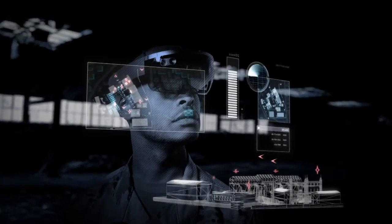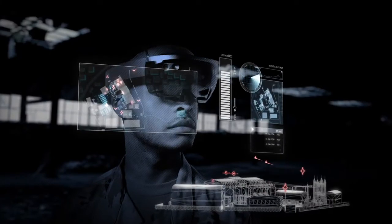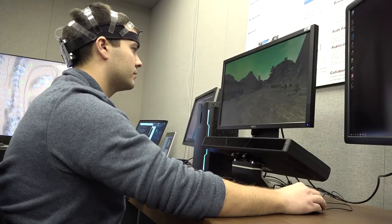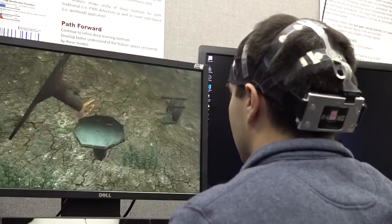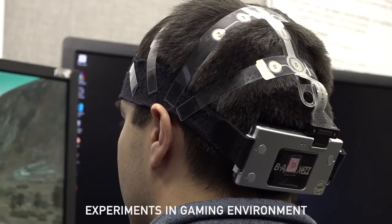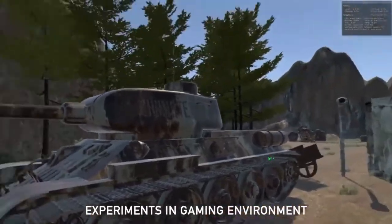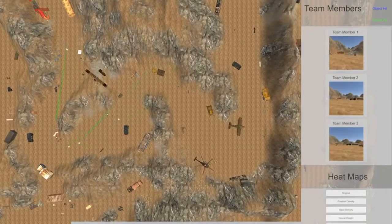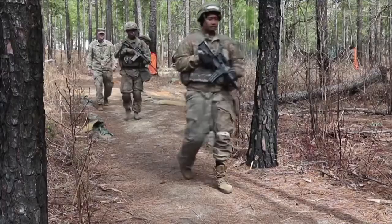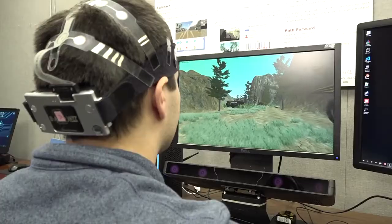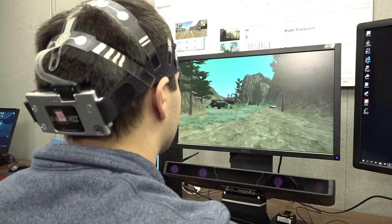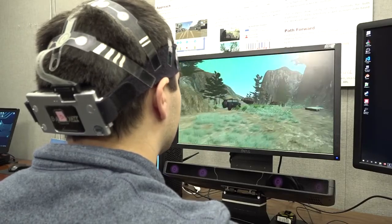Have you ever wanted to get inside a soldier's head? Army researchers have developed a human interest detector that can determine where people are looking and decode their brain activity. Researchers track neural responses and assess what captures a soldier's attention in threat environments. This will lead to better situational awareness on the battlefield, enable commanders to make better decisions, and ultimately improve the ability of the soldier to team with future AI agents.